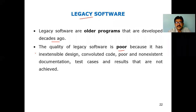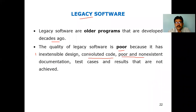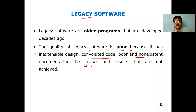The reasons are: the first reason is inextensible design. The second one is convoluted code. The third one is because of poor and non-existing documentation. The fourth one is not performing different test cases — how it will behave and what results come from different test cases. Because of these four reasons, the quality of legacy software is very poor.